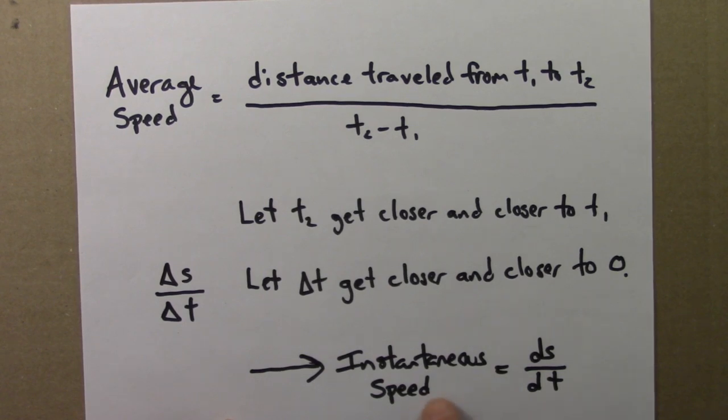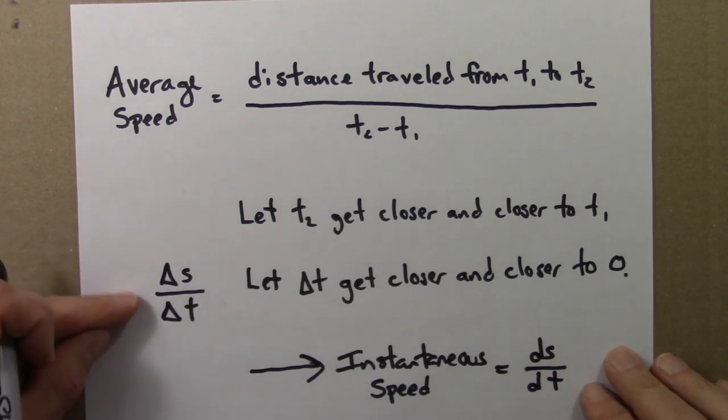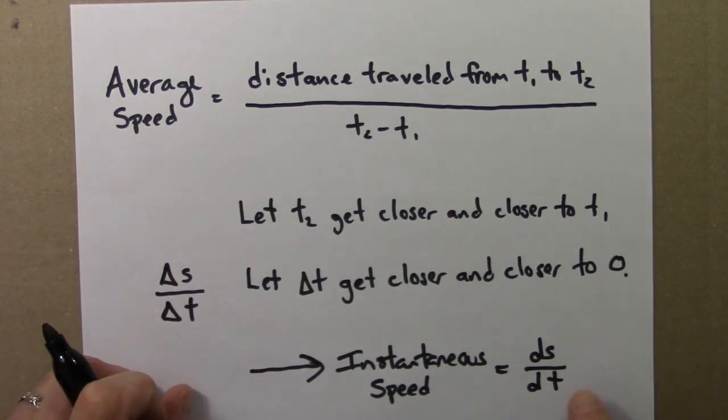And the notation for that is often ds over dt. So instead of these triangles, deltas, which means big change, we use these little d's, which mean instantaneous change.